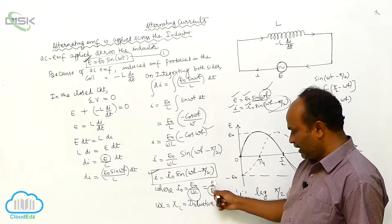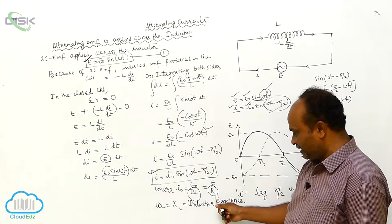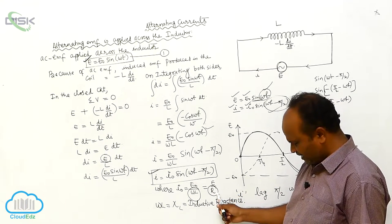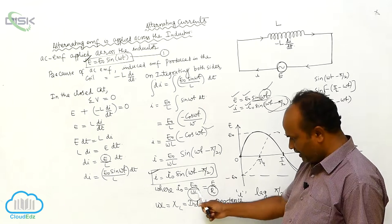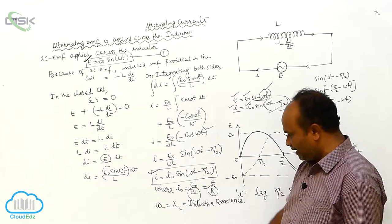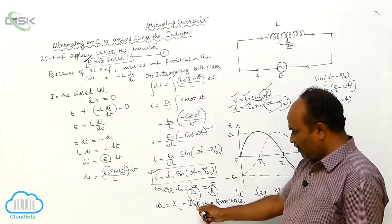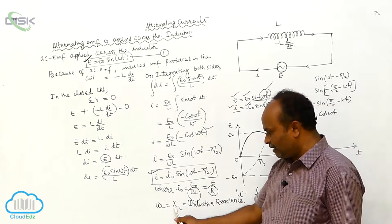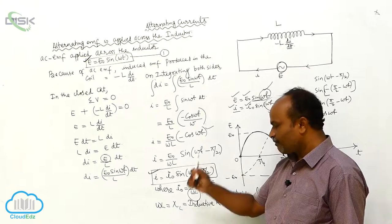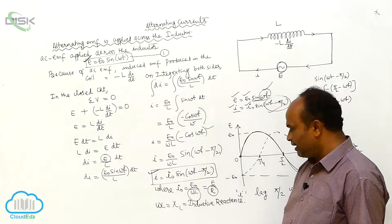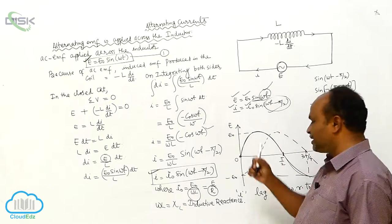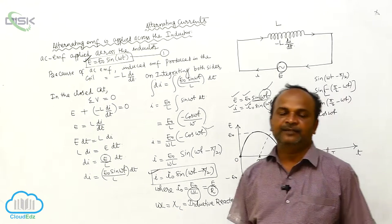Generally, current is equal to EMF by resistance. In the place of resistance, what is there? ωL. Here, ωL is denoted by XL. That is called inductive reactance.